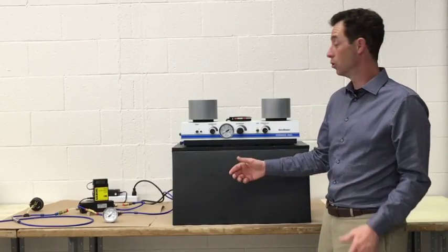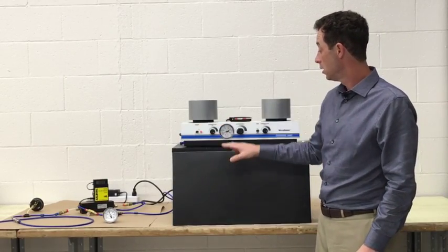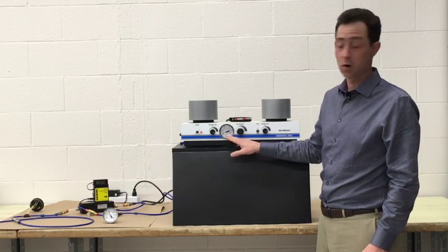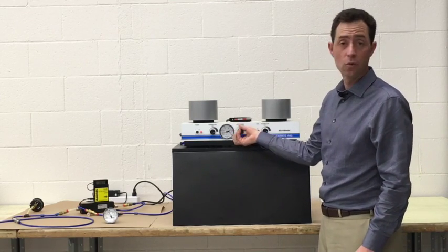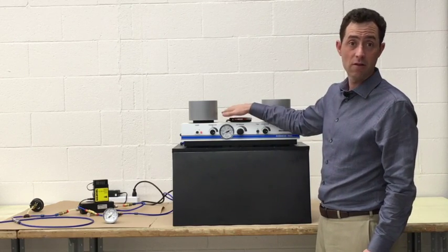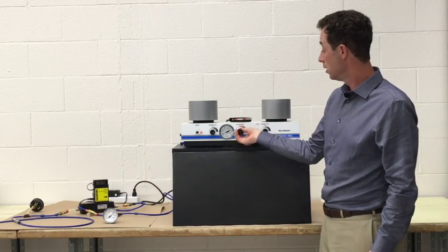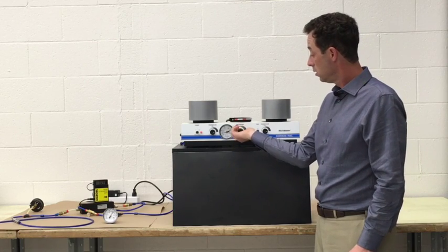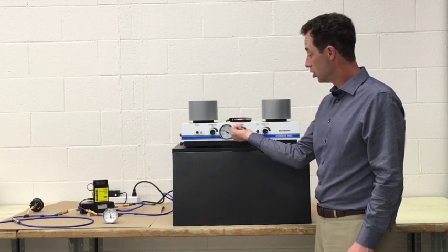While this isn't a long-term solution, in some cases if you're not seeing the blaster pressurize properly you can turn the regulator all the way counterclockwise. That will allow the vent pinches to close and then turn it back to your desired blast pressure.